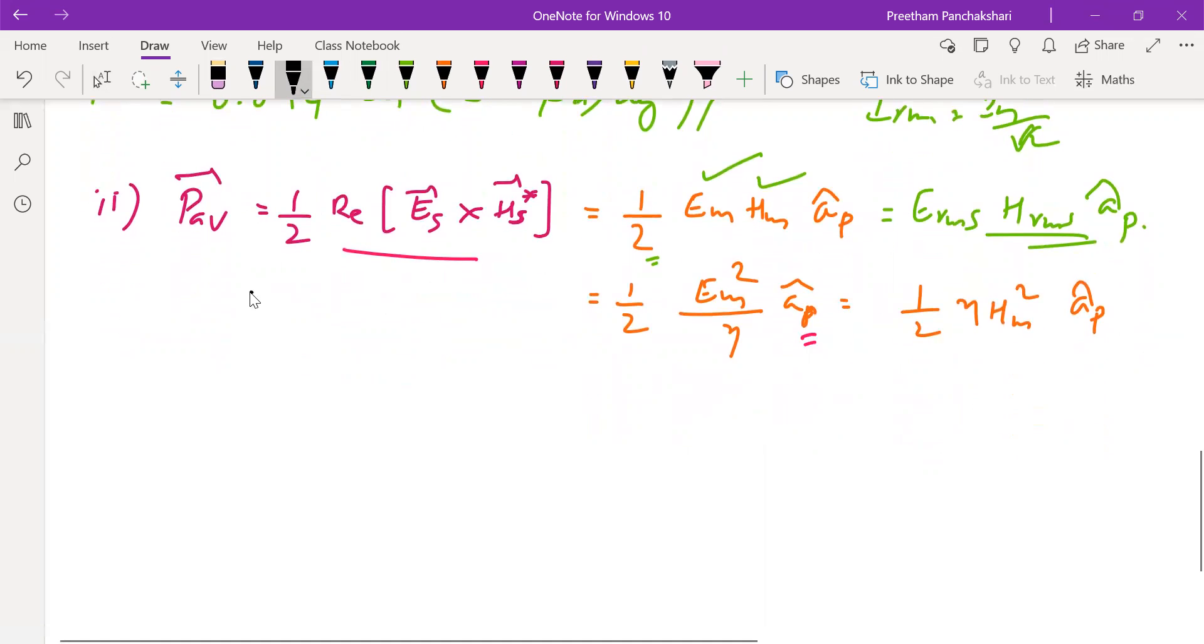Now we will go by this method. First, we will find E_s. That is 6 cos(ωt - βx) can be written as e^j(ωt - βx). Direction of E is z.